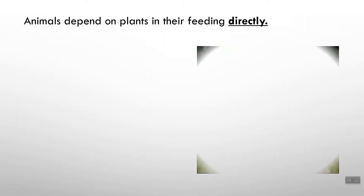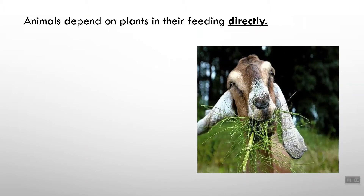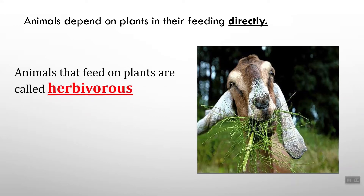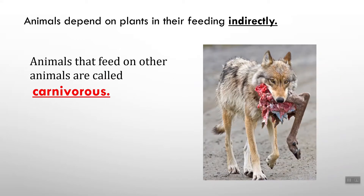Animals depend on plants in their feeding. For example, this goat eats plants. Animals that feed on plants only are called herbivores. Animals can depend on plants directly or indirectly.